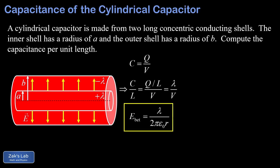Next we want to compute the potential difference between the two conductors, which requires computing a path integral. We choose the simplest path from one conductor to the next. I labeled our starting point as point one and our finishing point as point two — we're moving radially outward from the inner positively charged shell to the outer negatively charged shell. Our potential difference V₁ minus V₂ is given by the path integral of the electric field dotted into the path increment dl, taken from point one to point two.